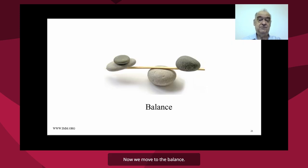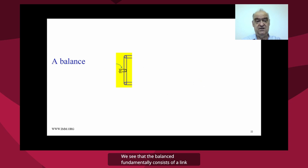Now we move to the balance. The balance, as its name implies, is simply a link which can balance or rotate around a link in the center. And if we go to the next slide, we see that the balance fundamentally consists of a link with a rotary joint in the center.